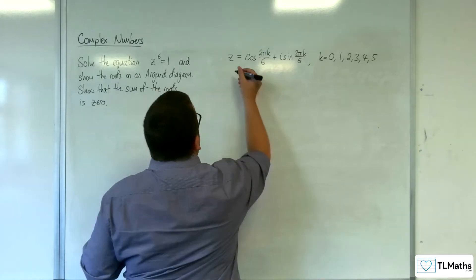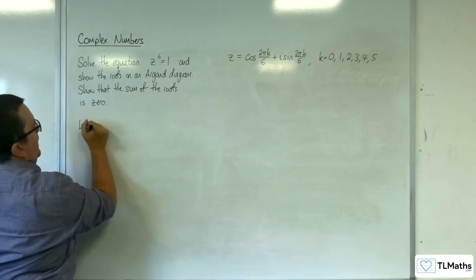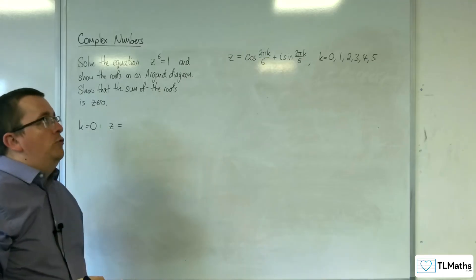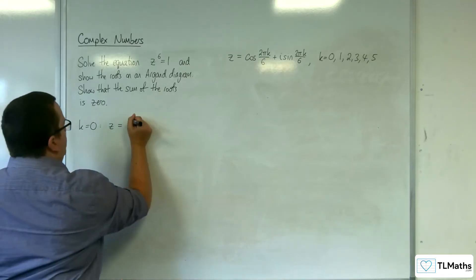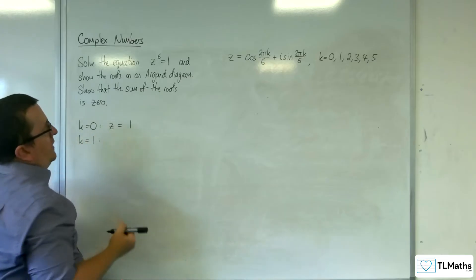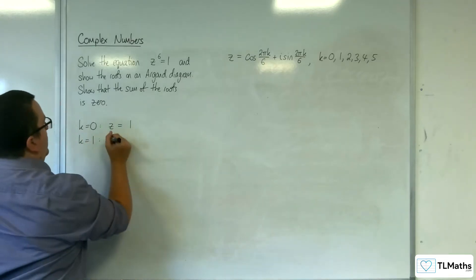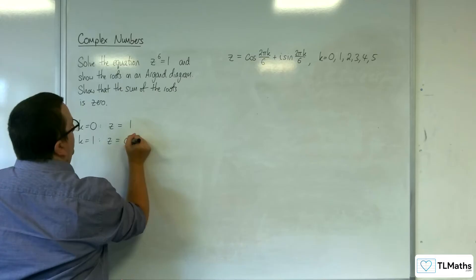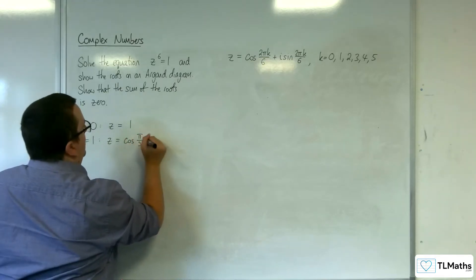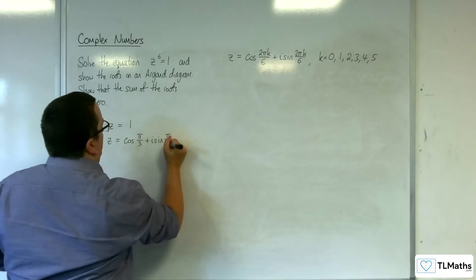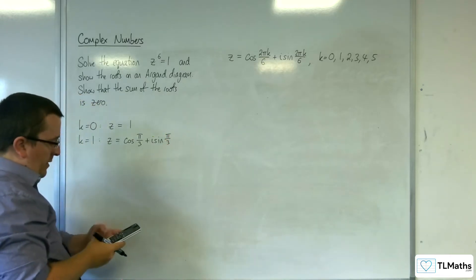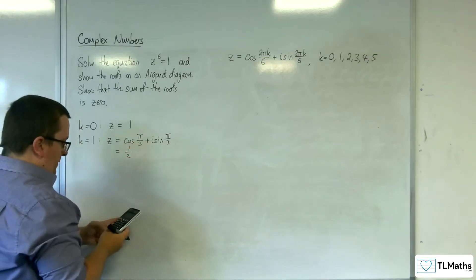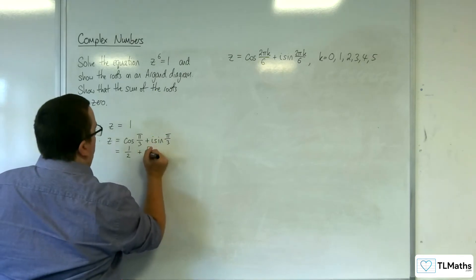When k is equal to 0, we get cosine of 0 plus i sine of 0, which is just 1. When k is equal to 1, we get z is equal to cosine of 2 pi over 6, so cosine of pi over 3, plus i sine pi over 3. Cosine pi over 3 is 1 half, and sine of pi over 3 is root 3 over 2, so this is equal to 1 half plus root 3 over 2i.